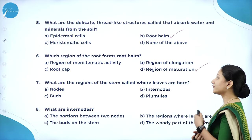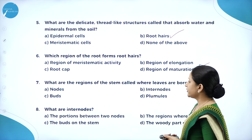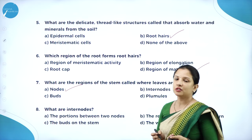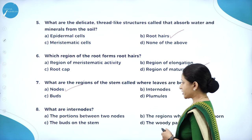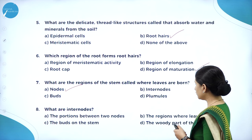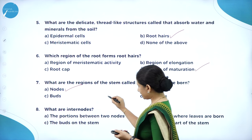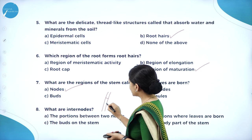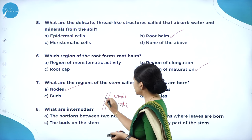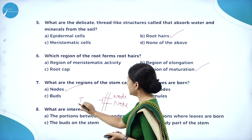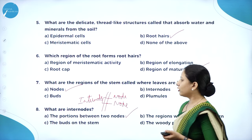What are the regions of the stem called where leaves are born? Leaves are usually born on the nodal region — so the answer is nodes. What are internodes? If this is a stem, it has nodes at intervals. The portion between the two nodes is called the internode. So option A — the portion between two nodes — is the right answer.